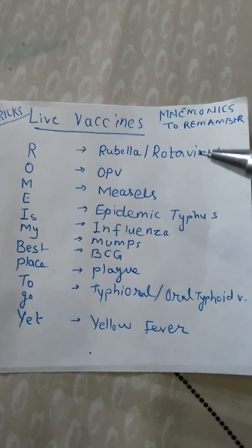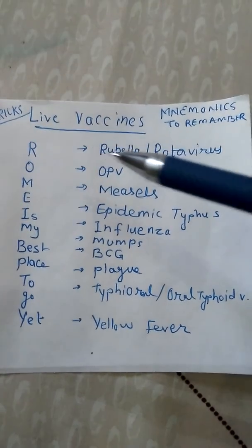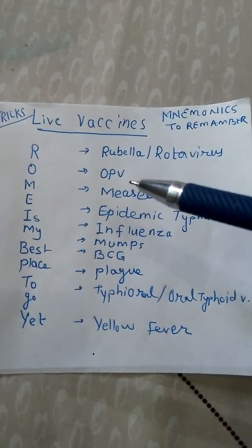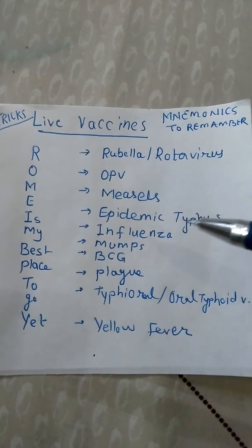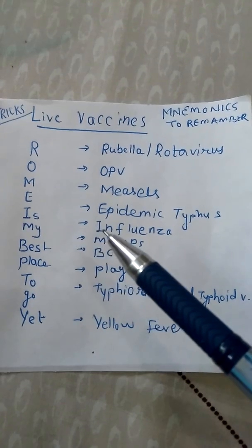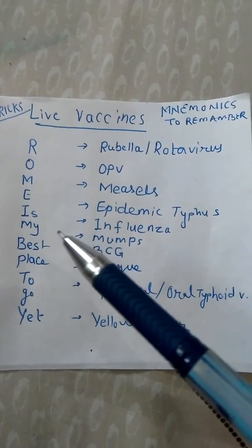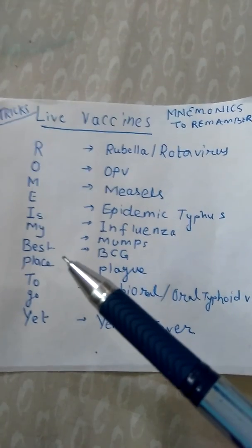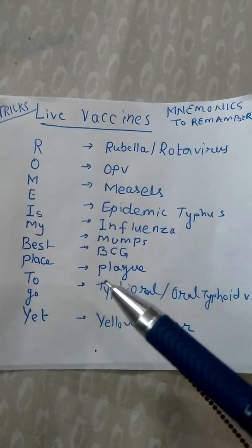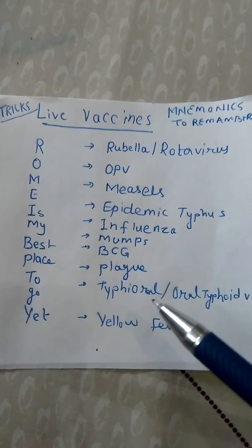R means Rubella and Rotavirus. O means OPV — Oral Polio Vaccine. M means Measles. E means Epidemic Typhus. I means Influenza. My means Mumps. Best means BCG. Place means Plague. T stands for Typhoid oral.